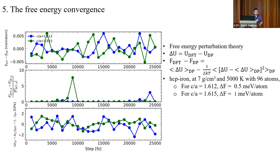To determine the phase diagram at high pressure and temperature, we not only need accurate pressure, force, and internal energy — we also need the free energy difference between the DP model and DFT. For this we run MD simulations. As an example, for HCP iron we run MD at around 7 g/cm³ and 5000 K with only 100 atoms, varying the c/a ratio and selecting seven configurations labeled with DFT.